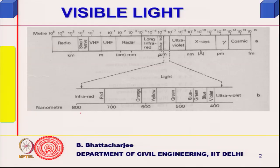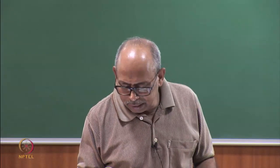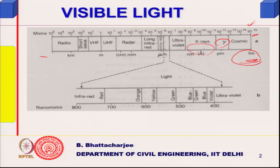Looking at the electromagnetic spectrum, wavelengths range from 10⁻¹⁵ meters on the short end to 10⁵ meters on the long end. Cosmic radiation has the smallest wavelength and highest frequency, followed by gamma rays, X-rays, and ultraviolet. The visible light band spans roughly 370 nanometers to about 760–800 nanometers.